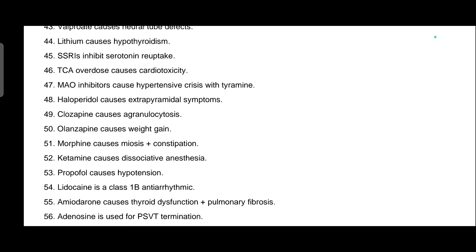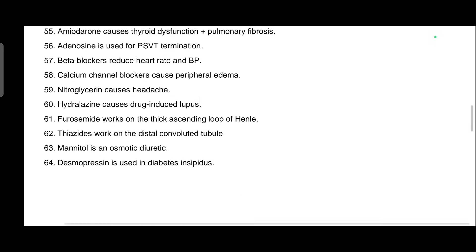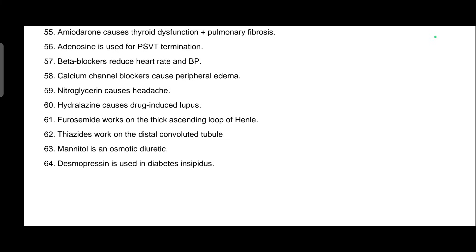Lidocaine is a class 1B antiarrhythmic. Amiodarone causes thyroid dysfunction plus pulmonary fibrosis. Adenosine is used for pulseless supraventricular tachycardia. Beta blockers reduce heart rate and BP. Calcium channel blockers cause peripheral edema. Nitroglycerin causes headache. Hydralazine causes drug-induced lupus. Furosemide works on the thick ascending loop of Henle. Thiazides work on the distal convoluted tubules. Mannitol is an osmotic diuretic. Desmopressin is used in diabetes insipidus.